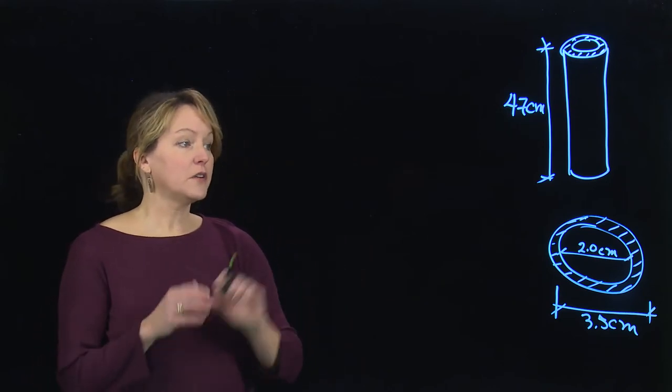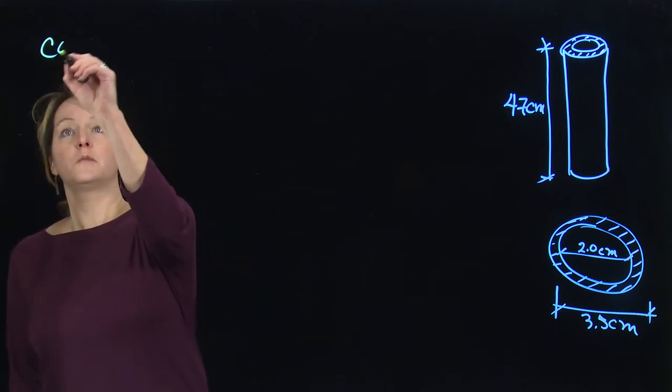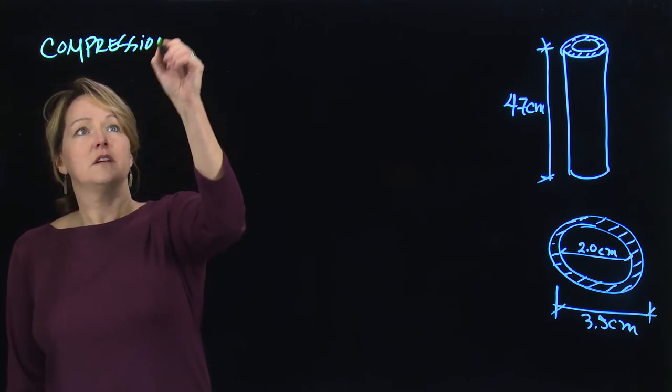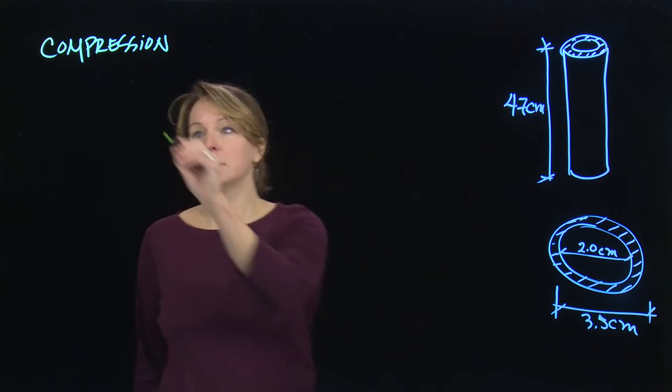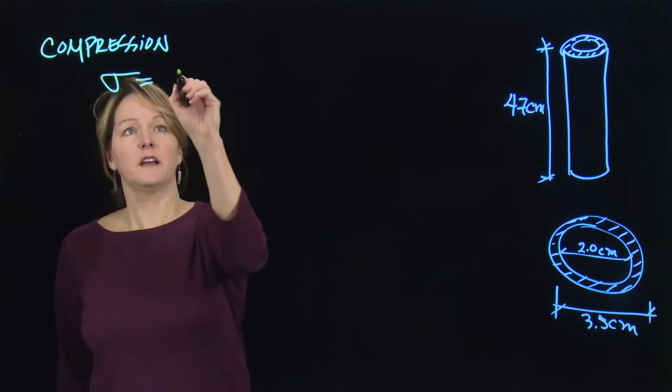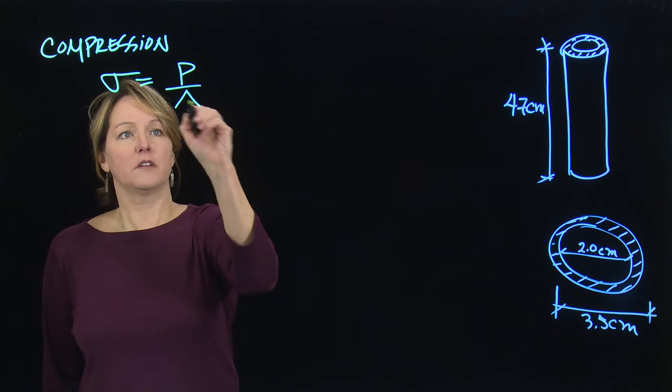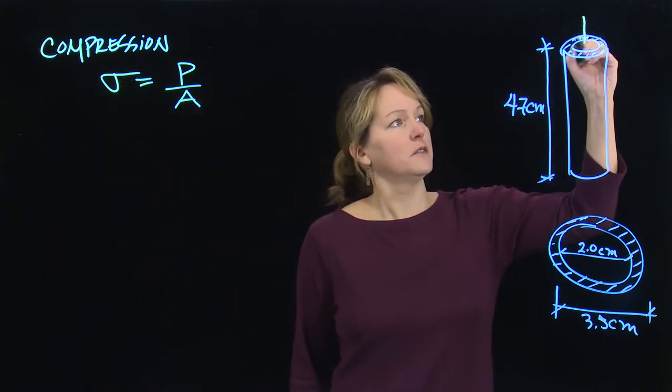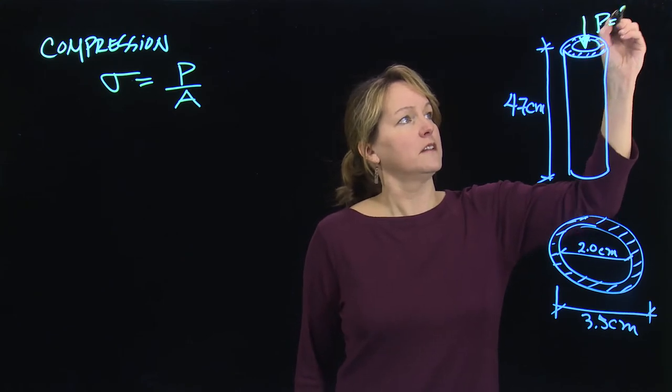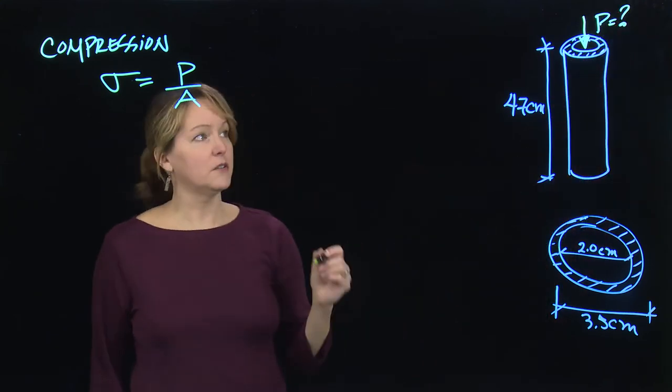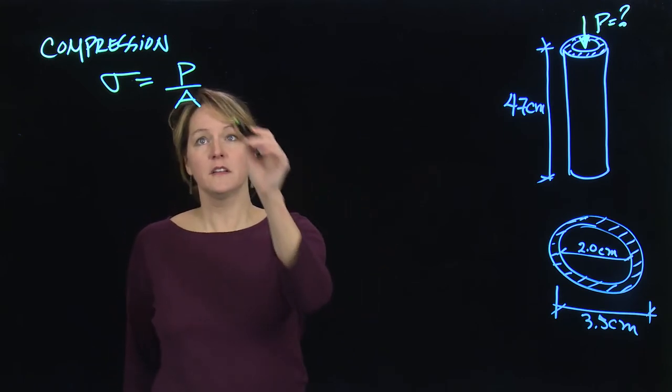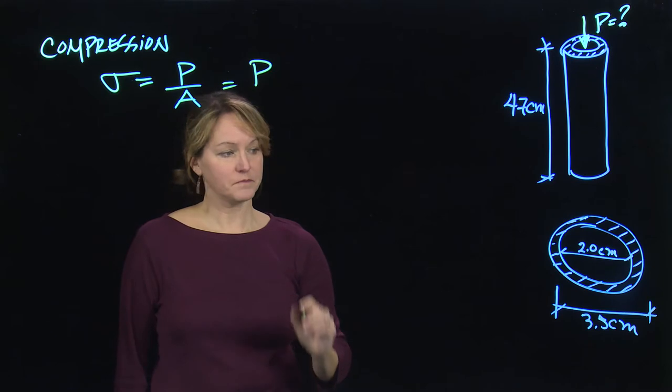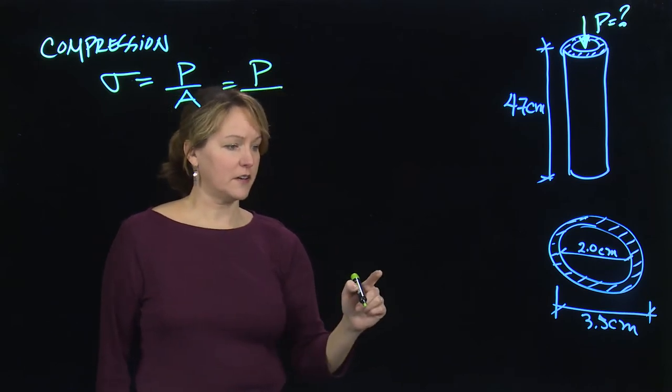So again, we have two different things we have to look at. We'll want to look at compression. So this is if the stress, we want to look at the stress internally. And that stress we calculate as force over area. And I'm trying to figure out how much load this column can carry, which is my femur. What is the load? So that is actually my unknown in this scenario. And that's a little different than the previous examples. So my P is unknown. So I'm going to leave that as just P.